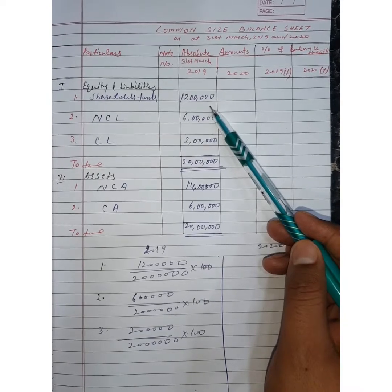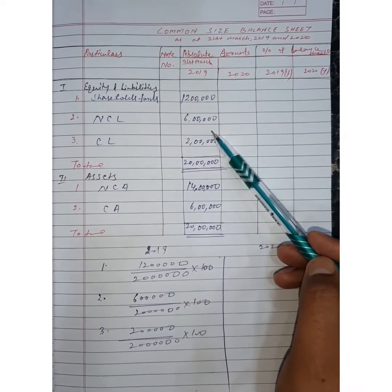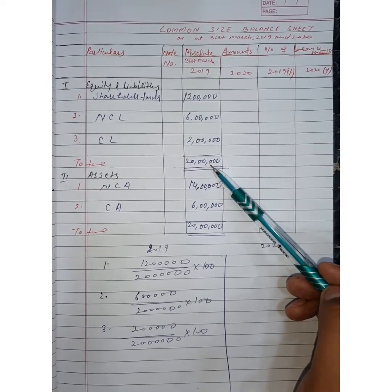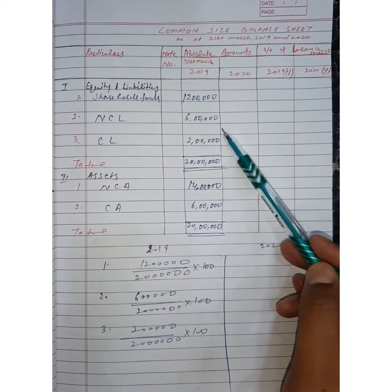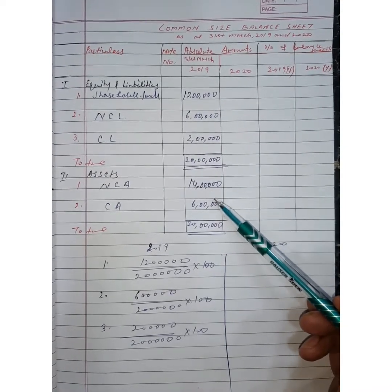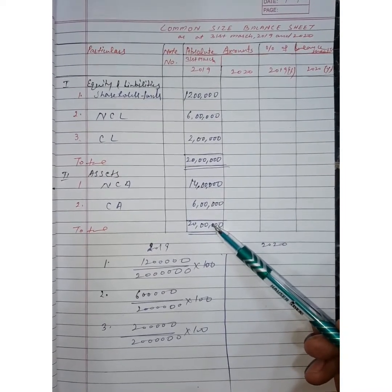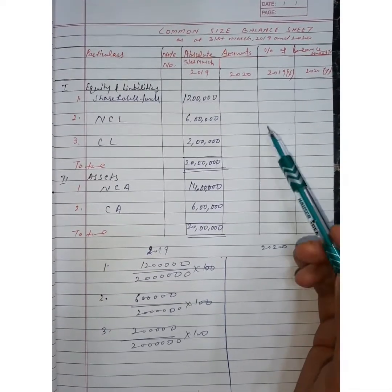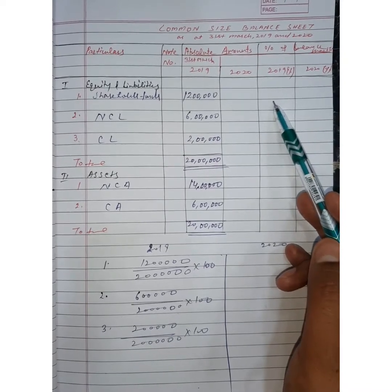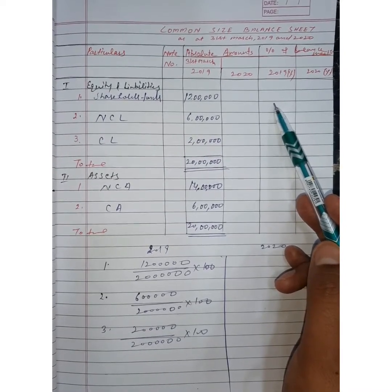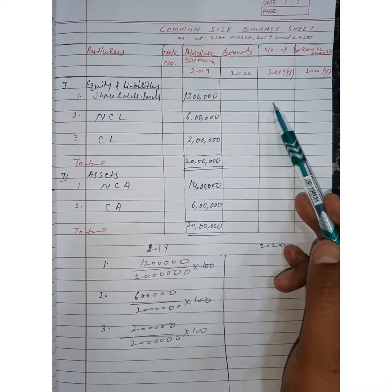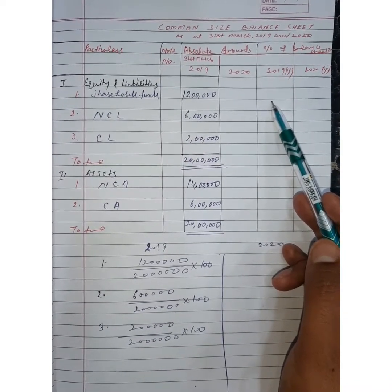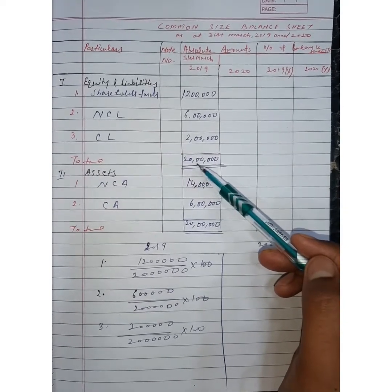अगर आपके पास shareholder fund 12 lakh है, non-current liability 6 lakh है, current liability 2 lakh है, and total assets 20 lakh हो जाएगी। Same non-current assets 14 lakh, current assets 6 lakh, and total assets 20 lakh। अब firstly आपको इसको percentage में convert करना है। Common size statement में एक particular base amount पर percentage निकालते हैं।